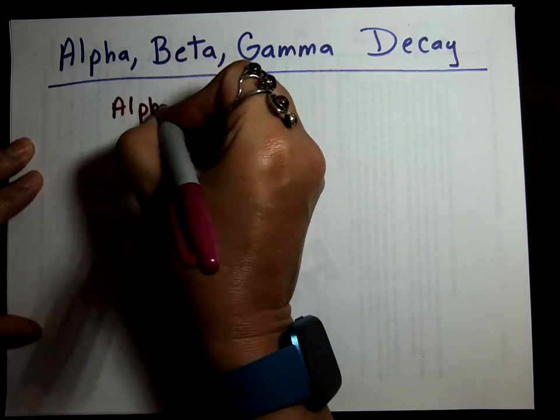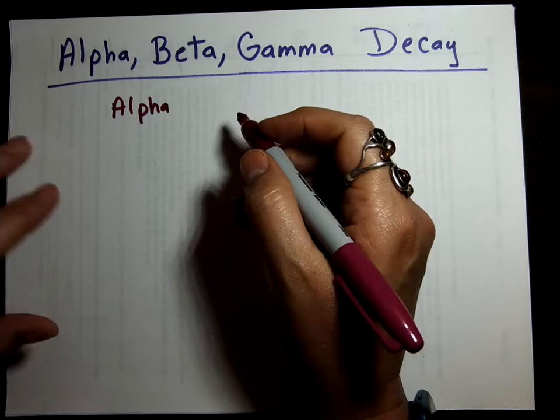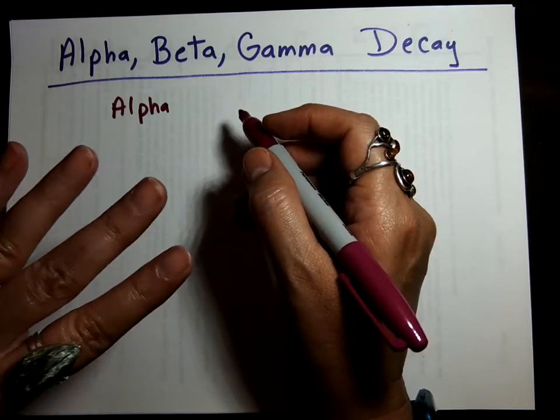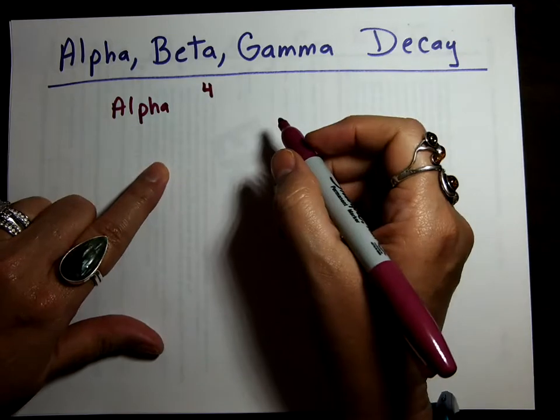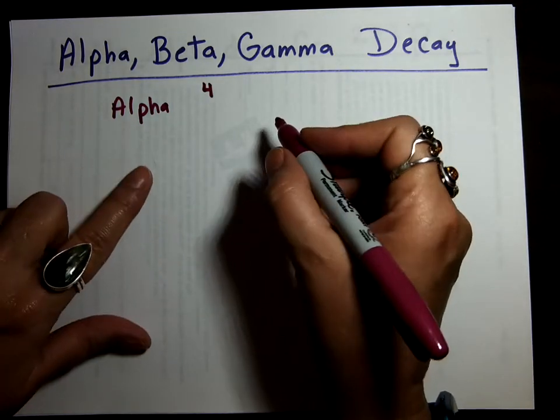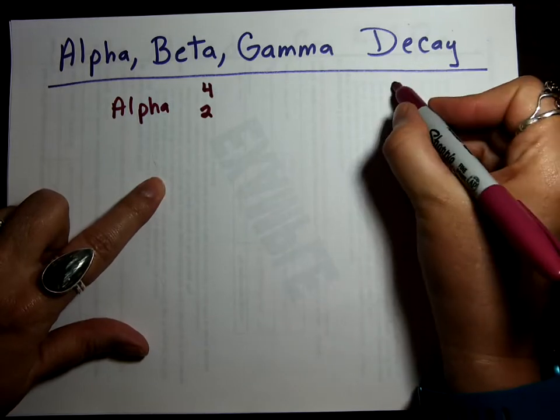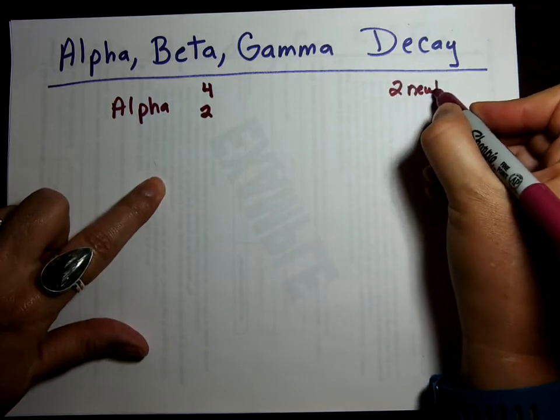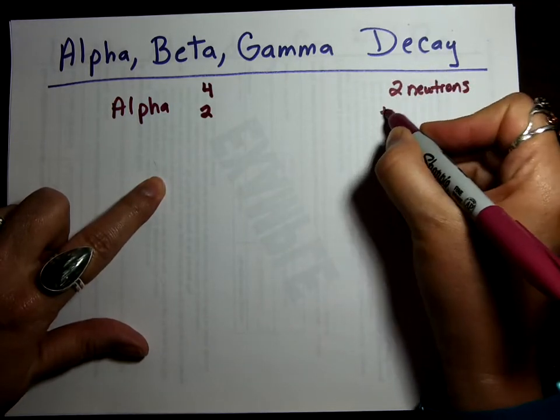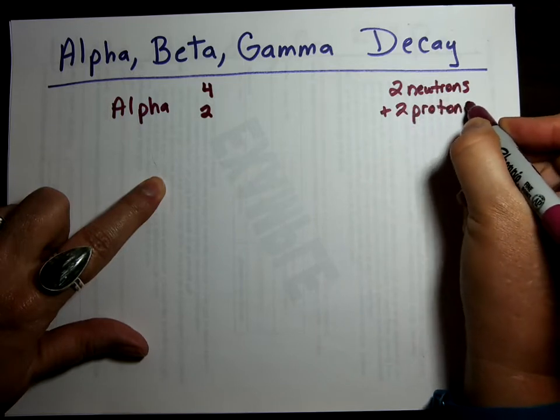An alpha particle is 4 with a mass, so that's the top number, and 2 protons, that's the bottom number. So 4 comes from 2 neutrons plus 2 protons in an alpha particle.